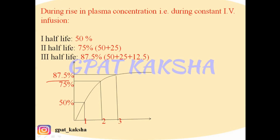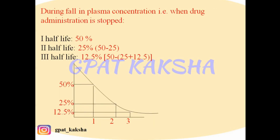During the fall in plasma concentration — when drug administration is stopped — in the first half-life it becomes 50% of its peak concentration. In the second half-life it becomes 25% (half of 50%). In the third half-life it becomes 12.5% (half of 25%). So plasma concentration halves with each successive half-life.